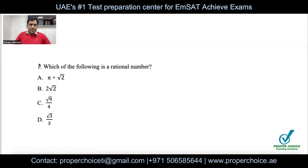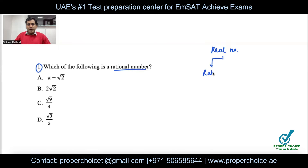Question number one: which of the following is a rational number? Generally, real numbers are divided into two types: rational numbers and irrational numbers.